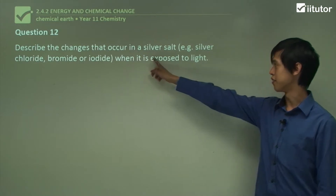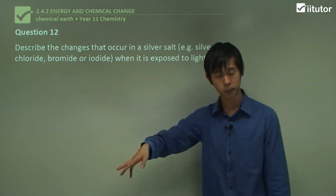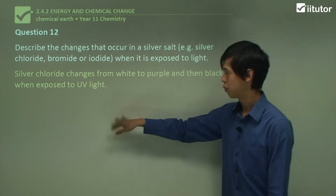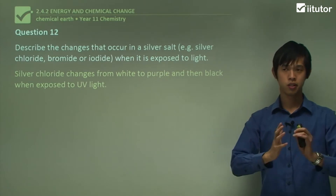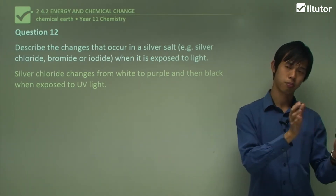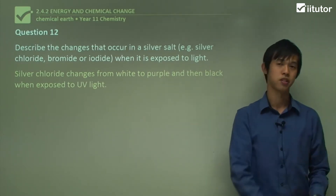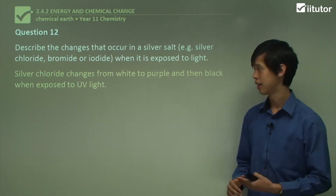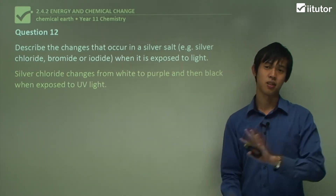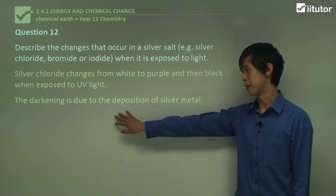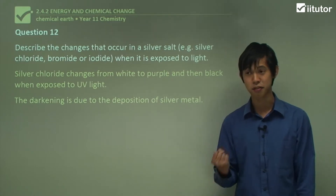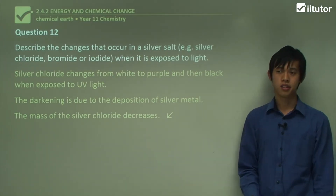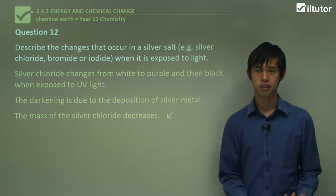Question: describe the changes that occur in a silver salt — e.g. silver chloride, bromide, or iodide — when exposed to light. Silver chloride changes from white to purple, and then black when exposed to UV light. If you have a very thin layer, less light is needed, which is why photographic film can work this way and why you don't see purple film. The darkening is due to the deposition of silver metal — the silver chloride becomes silver metal and turns black. The mass of the silver chloride will also decrease, because it's being converted to silver metal.